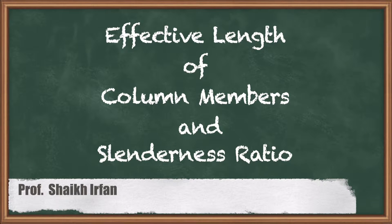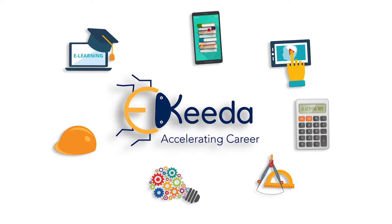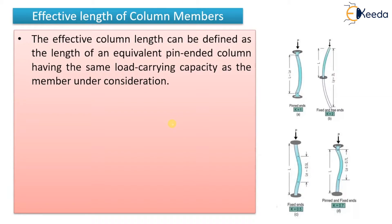Hello everyone. In this video we are going to see the effective length of column and slenderness ratio. The effective length of a column can be defined as the length of an equivalent pin-ended column having the same load-carrying capacity as the member under consideration.